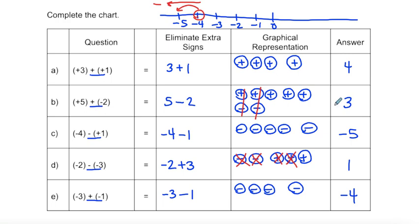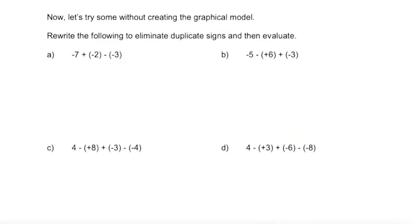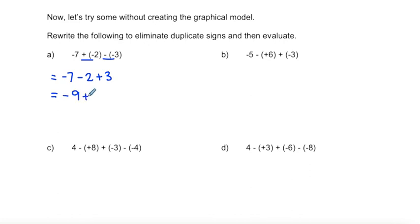Now let's try some without creating the graphical models, since they're not always practical. We eliminate duplicate signs, then evaluate. Starting with negative seven: a plus and a negative make negative two; a negative and a negative make a positive three. Going left to right: negative seven take away two is negative nine, and negative nine plus three is negative six.